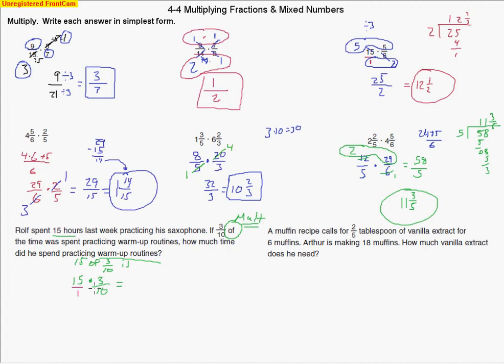So we'll just write down 15 times 3/10. One way we can remember that of means multiply is that we'll say 15 of 3/10 is... is means equals. Let's figure out what it equals. So let's write that 15 as a fraction, 15 over 1. And now we can do the reducing. Let's take out the common factor of 5. That makes 2 here and 3 here. Multiply across. We've got 9/2. But let's change that 9/2 to a mixed number. 2 goes into 9 four times with 1 left over. So 4 and a half. So 4 and a half hours was spent warming up during that week.